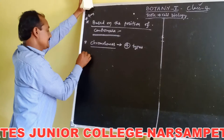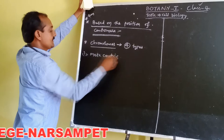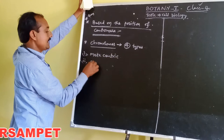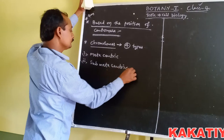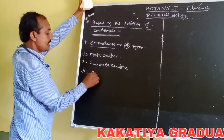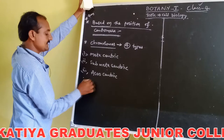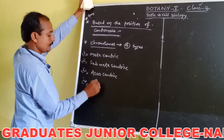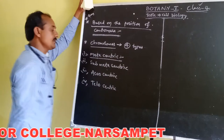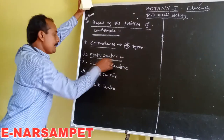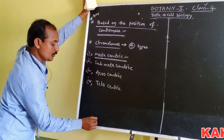The four types are: first, metacentric; second, submetacentric; third, acrocentric; and fourth, telocentric. First, metacentric — in these chromosomes, the centromere is located at the center of the chromosome.